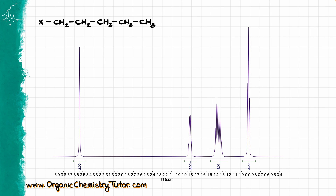Moving on, with the pentyl group I want to show what I like to call a 'forest,' which is an overlap of multiple signals in the aliphatic region. What looks like a four-hydrogen signal is actually an overlap of two two-hydrogen signals, corresponding to CH₂CH₂ in the middle of a longer chain. So whenever you have a long chain, you're going to get some sort of crazy multiplet — a forest in the aliphatic region between 1 and 1.5 ppm — and whenever you see something like that, most likely that is a long chain.